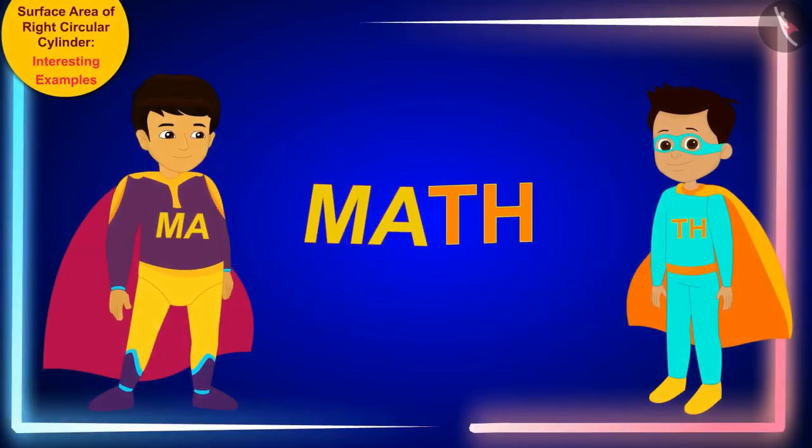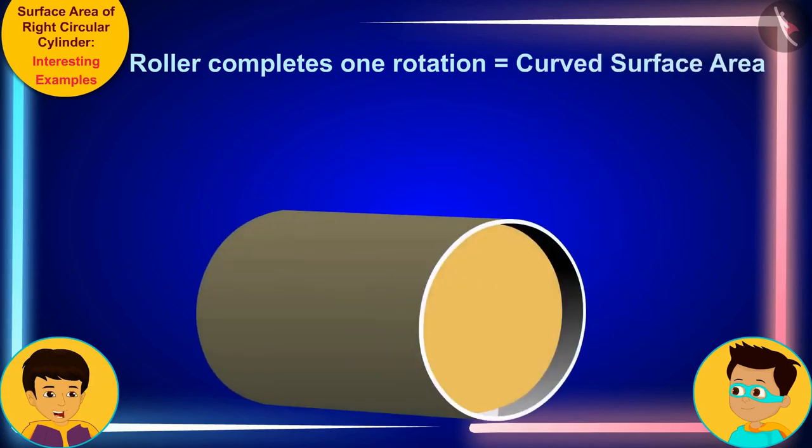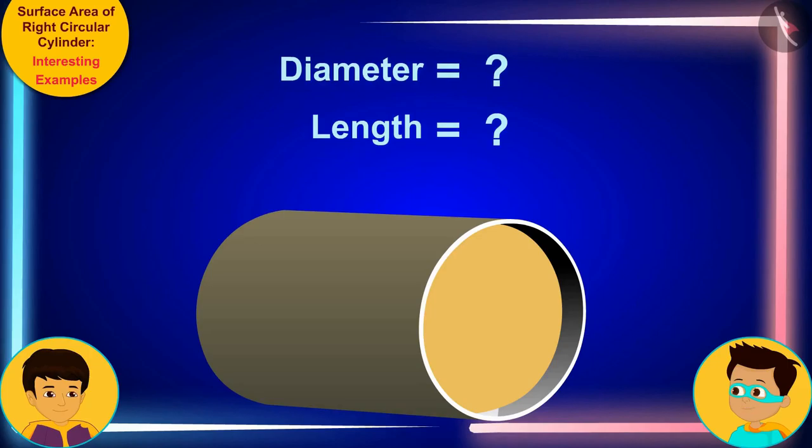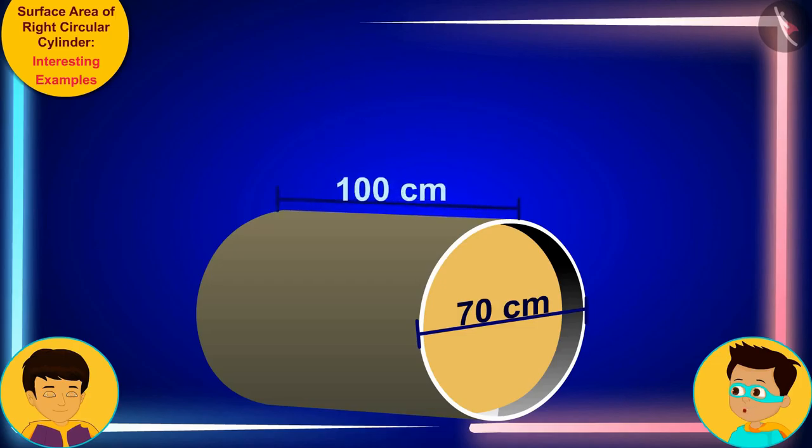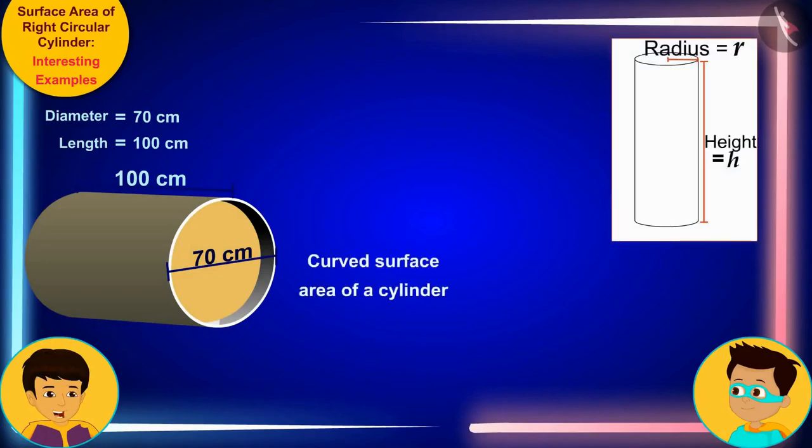We can find this very easily through mathematics. That means it's math time! Look Thomas, when the roller completes one rotation, it flattens the area of the field equal to its curved surface area. Can you tell me the diameter and length of the roller?